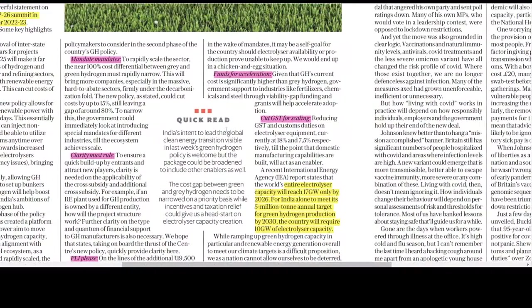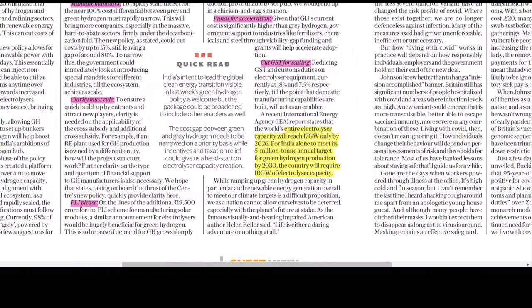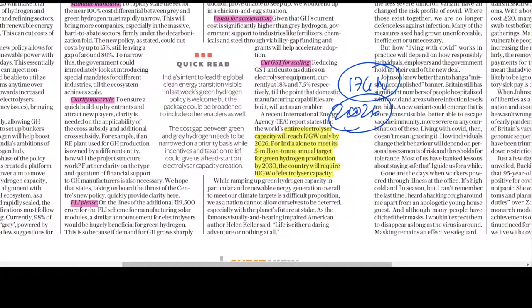One International Energy Agency report states that the world's entire electrolyzer capacity will reach 17 gigawatts by 2026. For India alone to meet its 5 million ton annual target for green hydrogen production by 2030, the country will require 10 gigawatts of electrolyzer capacity.